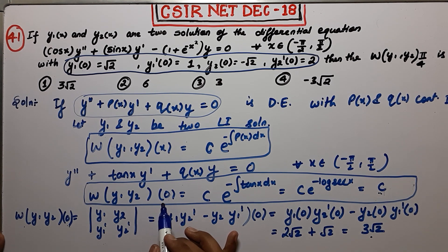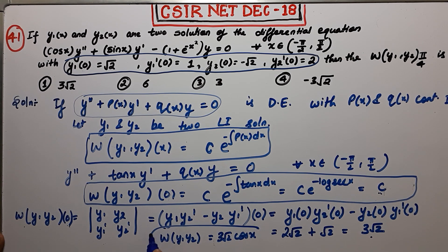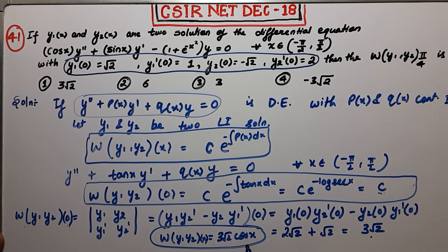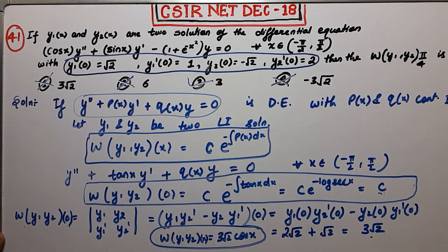Now that C = 3√2, the Wronskian is W = 3√2·cos(x). In the question, we have to evaluate it at π/4: W(π/4) = 3√2·cos(π/4) = 3√2·(1/√2) = 3. So the answer is 3 — the third option is correct and all other options are false. Thank you guys.